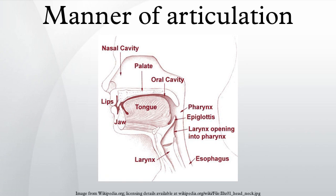The reverse process is fortition. Sibilants are distinguished from other fricatives by the shape of the tongue and how the airflow is directed over the teeth. Fricatives at coronal places of articulation may be sibilant or non-sibilant, sibilants being the more common. Taps and flaps are similar to very brief stops; however, their articulation and behavior is distinct enough to be considered a separate manner, rather than just length.